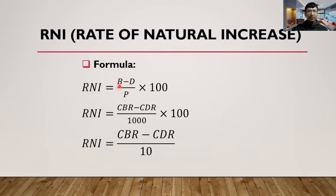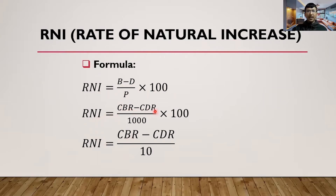The formula for Rate of Natural Increase is: RNI = (B − D) / P × 100, where B means total number of live births, D means total number of deaths, and P means total mid-year population. If we subtract B and D, divide by P, and multiply by 100, we get the rate of natural increase. There is another formula as well: RNI = (CBR − CDR) / 1000 × 100.